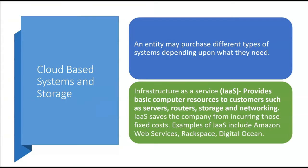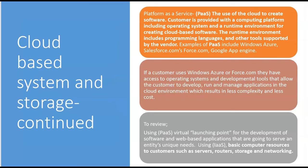Because it's stored in the cloud, you have a cloud-based system, you're using cloud computing, and you're contracting with a cloud service provider. An entity may purchase different types of cloud-based systems depending on what they need. There's Infrastructure as a Service — IaaS. IaaS provides basic computer resources to customers such as servers, routers, storage, and networking. The 'I' in IaaS stands for infrastructure, so infrastructure as a service saves the company from incurring the fixed costs of having to go out and buy servers, routers, storage, and networking.